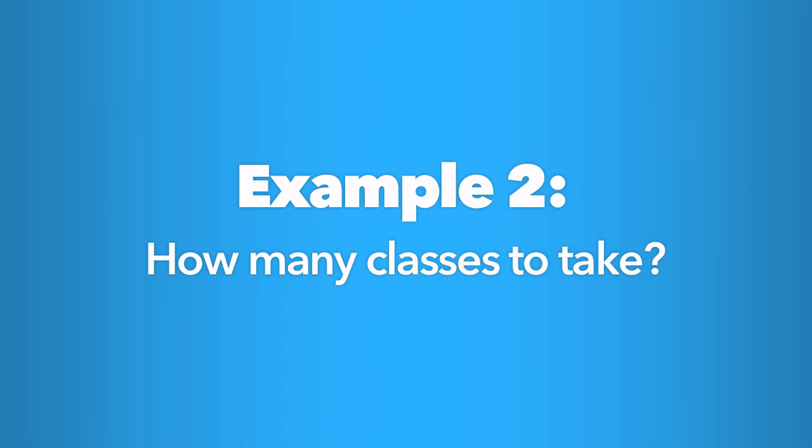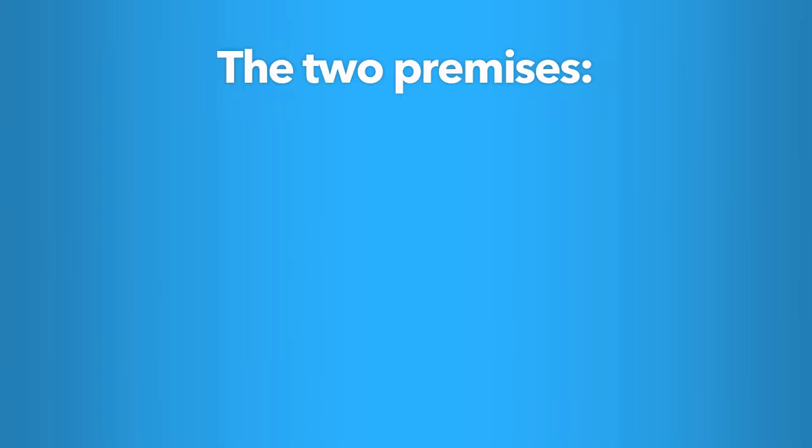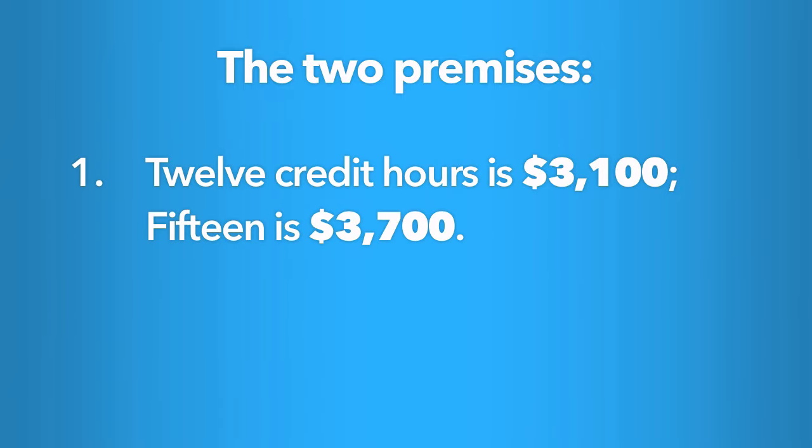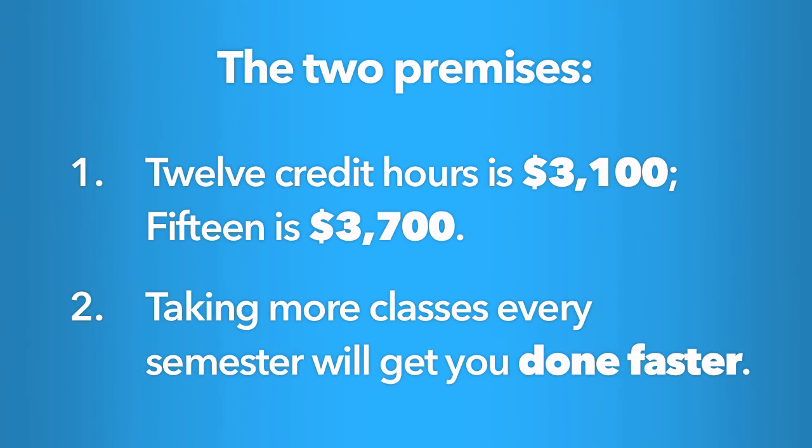In another example, the problem is trying to answer the question: how many classes should I take next semester? Again, there are two premises. One, tuition for 12 credit hours will cost $3,100 and tuition for 15 credit hours will cost $3,700. And two, it's better to take more classes every semester so that you can get done faster.